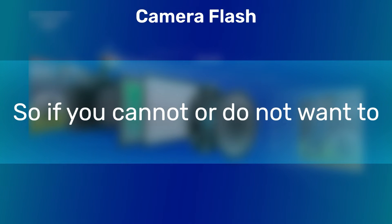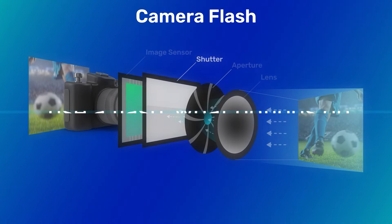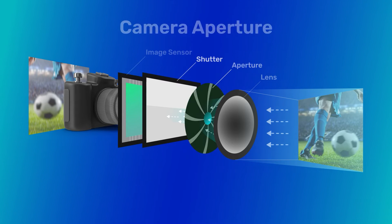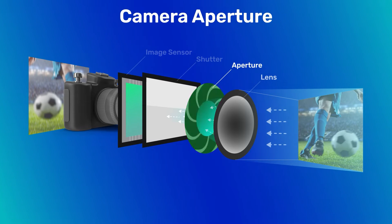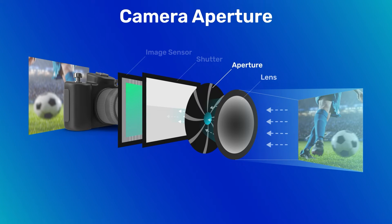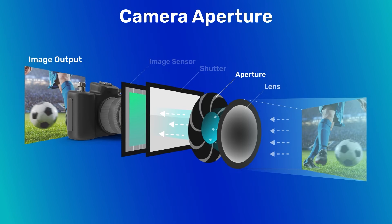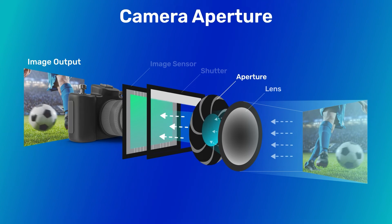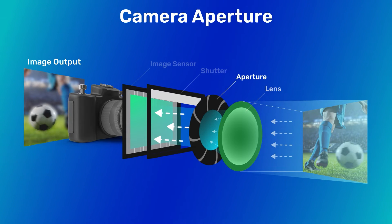So if you cannot or do not want to use a flash, what options do you have? Well, in that case, to get more light you can use another control. Behind the lens, we have an adjustable hole called the aperture. If you make the aperture size large, you get more light in and you can shoot with a higher shutter speed. However, if you make the aperture size too large, the depth of field decreases because the lens no longer acts as a pinhole.